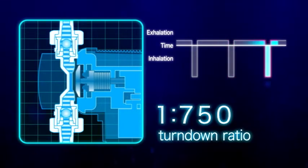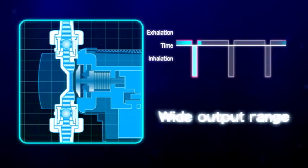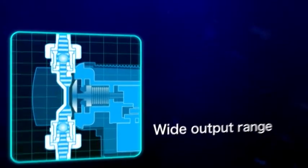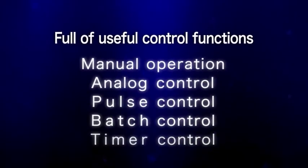With a turn down ratio of 750 to 1, the iX series pumps can be utilized in a broad range of applications and flow rates. The pump controller utilizes several control methods for output control.